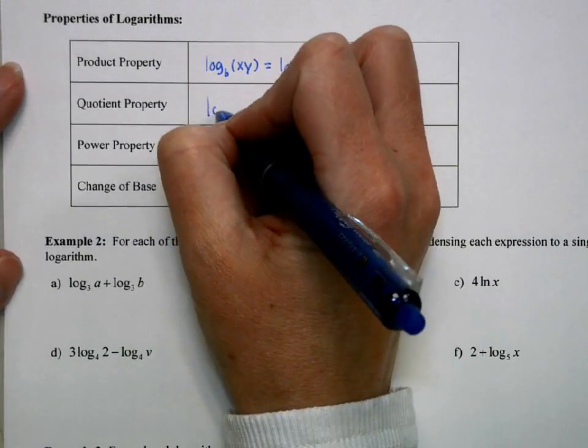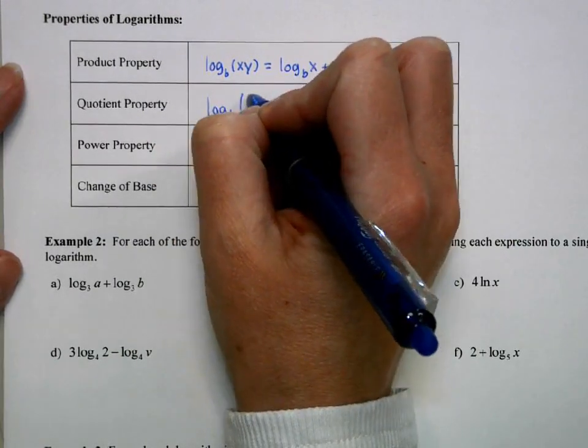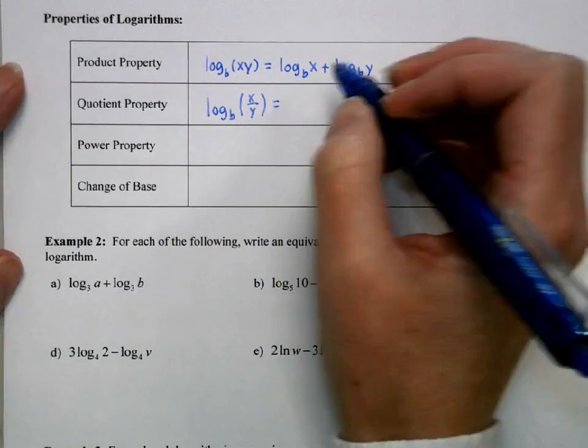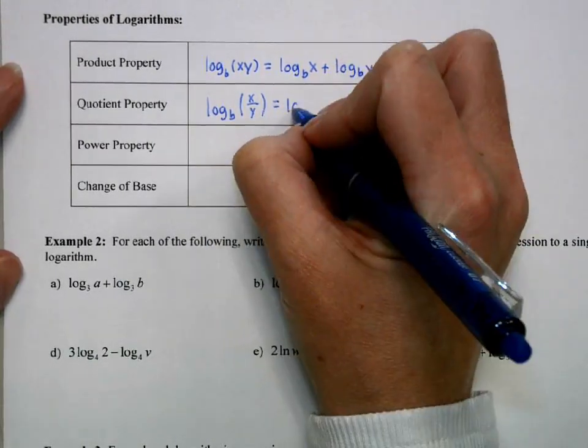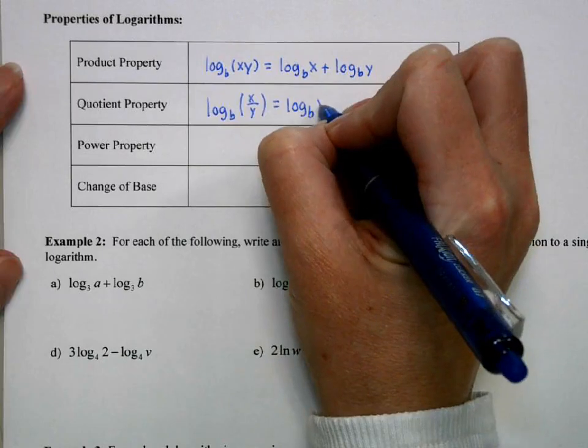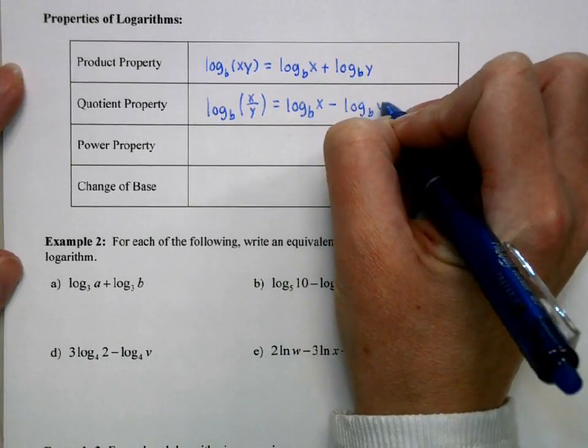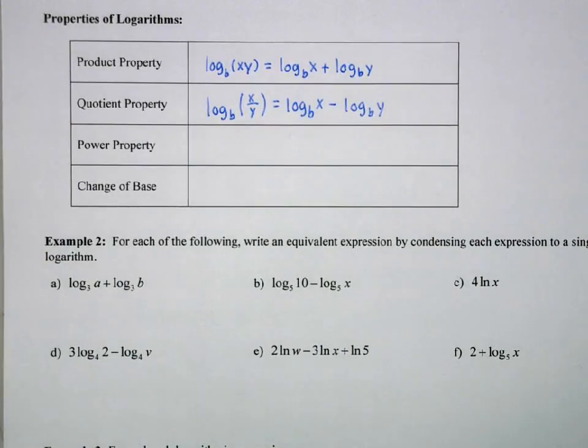Quotient rule. If instead of a product, we have a quotient, it's basically the same thing, but with subtraction. And again, when we're dividing things with the same base, we subtract those exponents.